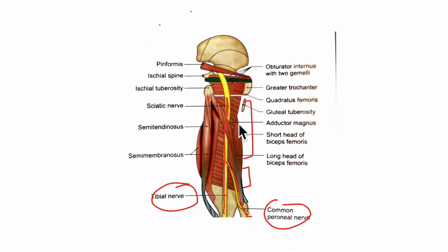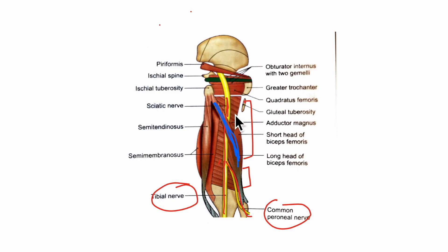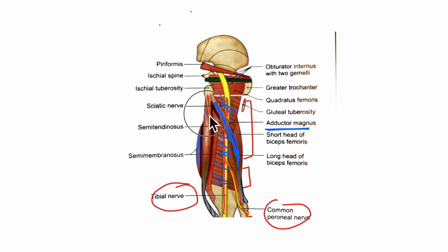Looking at its relations in the thigh: superficially or posteriorly the sciatic nerve is crossed by the long head of the biceps femoris. Deep or anteriorly it lies on the adductor magnus muscle. Medially it is related to the semimembranosus muscle and the semitendinosus muscle, and laterally it is related to the biceps femoris muscle.